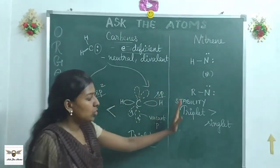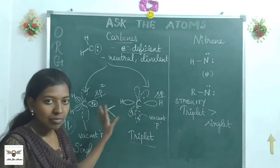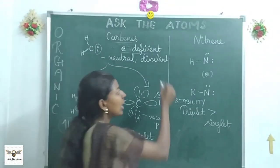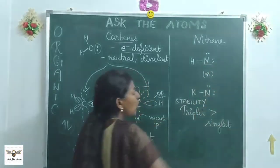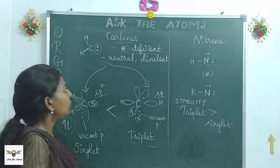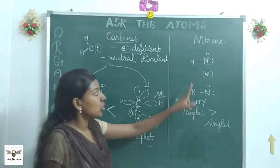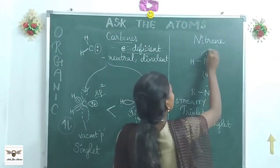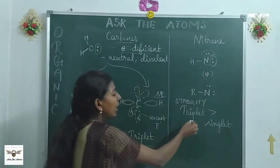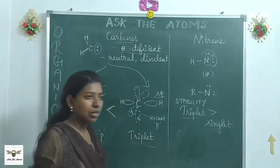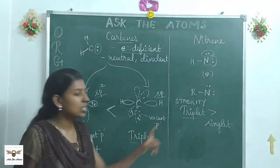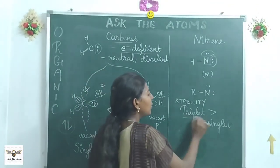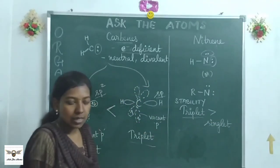Nitrene is the nitrogen analog of carbene. While carbene was carbon-based and divalent, nitrene has nitrogen that is monovalent with two lone pairs. Like carbenes, nitrenes also have singlet and triplet forms. When asked about stability, triplet is always more stable than singlet for both carbenes and nitrenes.